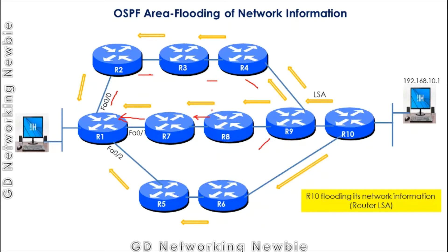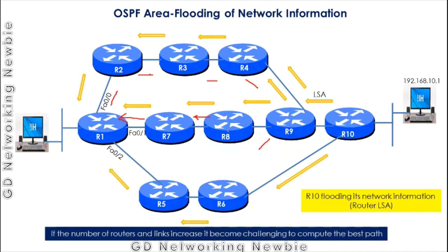This is the basic principle of flooding. The problem arises when we keep increasing the number of routers in a single OSPF domain — where all routers are configured with OSPF. Every router has to process all information coming from all other routers, and if the number of routers and links increases, it becomes really challenging to compute the best path. We need more resources, more processing power, and more memory.